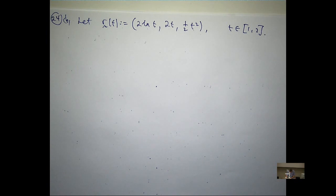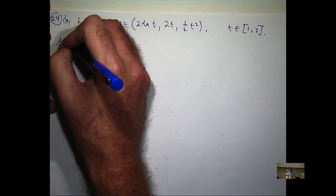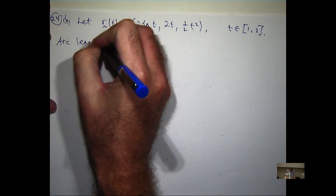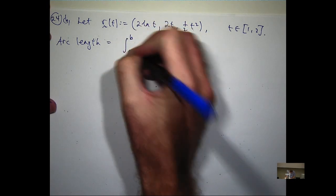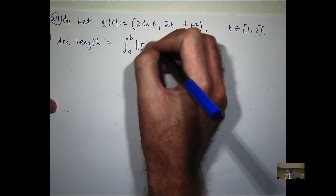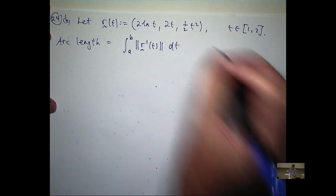Okay, so we know that the arc length is given by the following in the vector format.